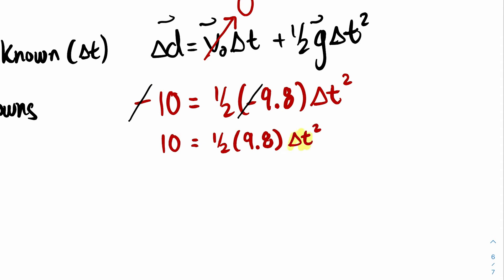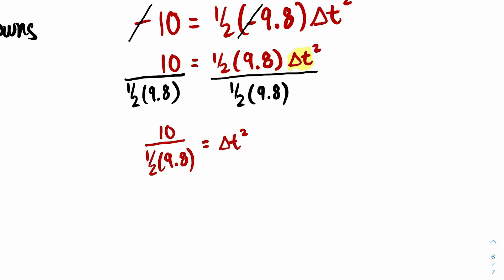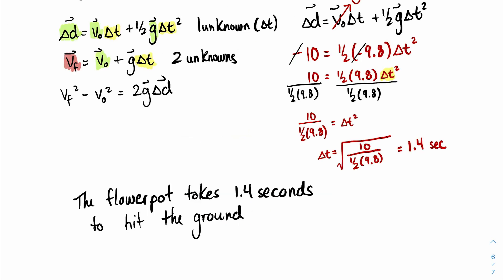Our focus is to isolate for the delta t. This means that we're going to divide both sides by the coefficient of our delta t. Our coefficient is going to be 1/2 times 9.8. We're going to divide both sides by 1/2 times 9.8. This simplifies to give us delta t squared, but our goal is to get delta t on its own, so we're going to have to take the square root on both sides of the equation. So delta t equals the square root of 10 divided by 1/2 times 9.8. Let's substitute that into a calculator and you should approximately get 1.4 seconds.